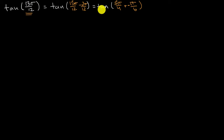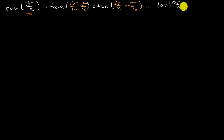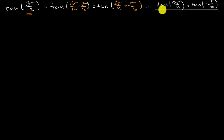Now let's keep on going together. We already know what the tangent of the sum of two angles is — we've proven that in another video. We know that this is going to be equal to the tangent of the first angle, 5π/4, plus the tangent of the second angle, tangent of negative π/6, all over one minus tangent of the first angle, 5π/4, times the tangent of the second angle, negative π/6.